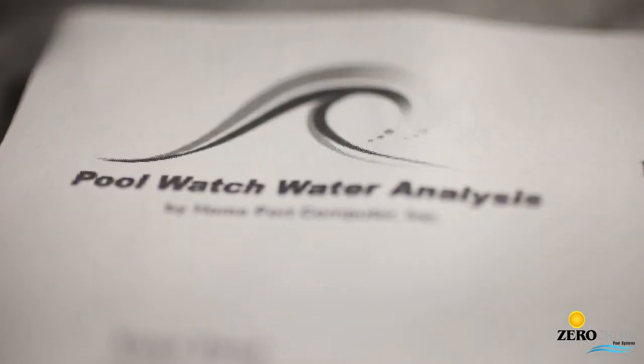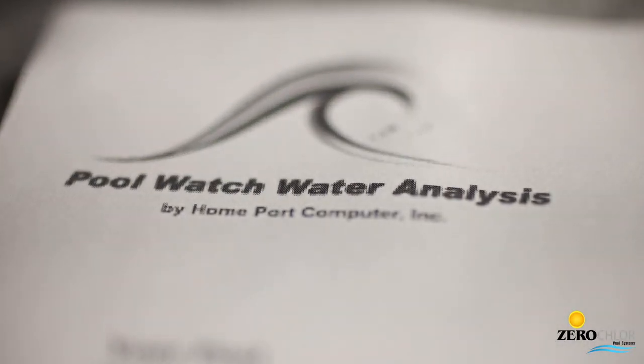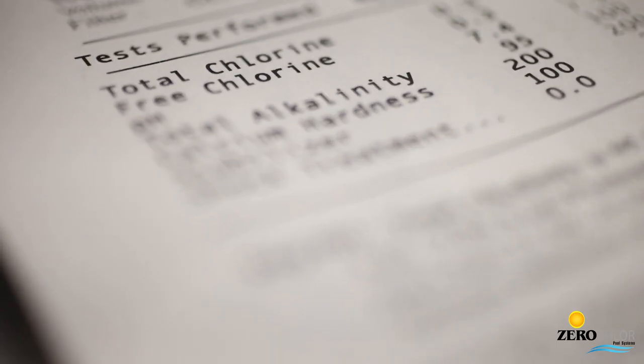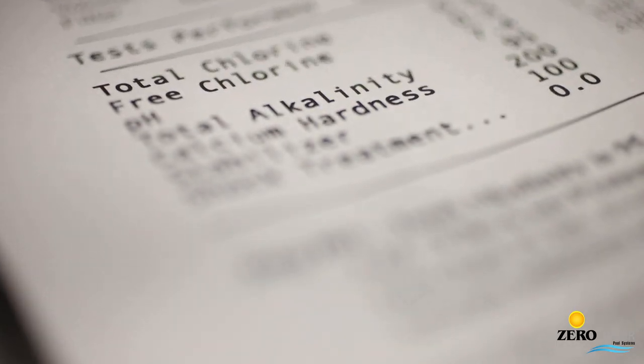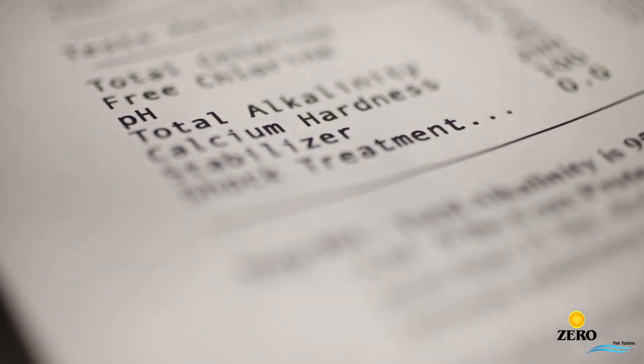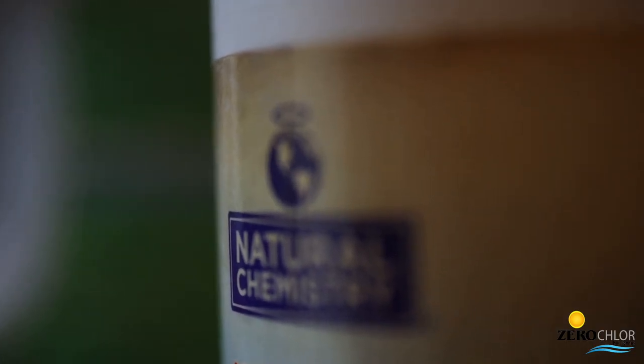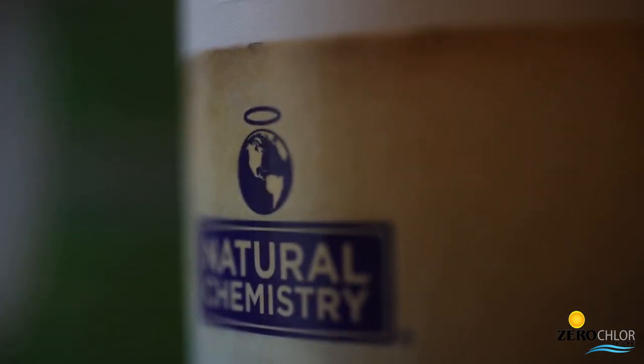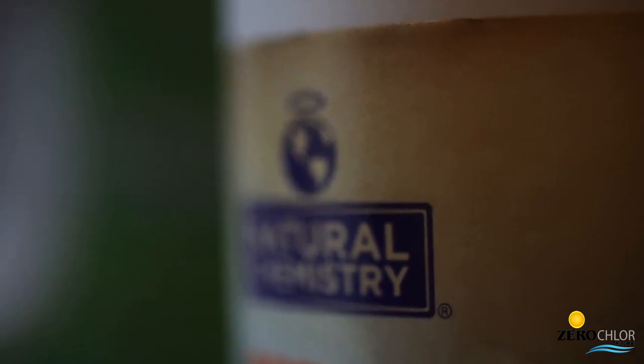There are several ways to test phosphates. We recommend taking a water sample to a pool store. If the result is less than 100, do not be concerned. If the test result is more than 100, a phosphate remover should be added. We recommend using the Natural Chemistry brand of products.